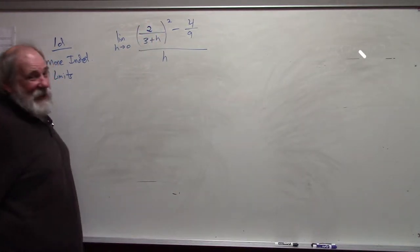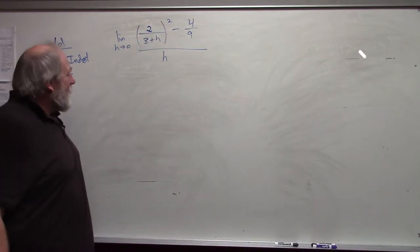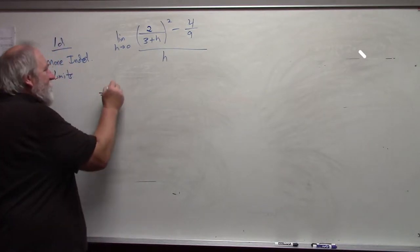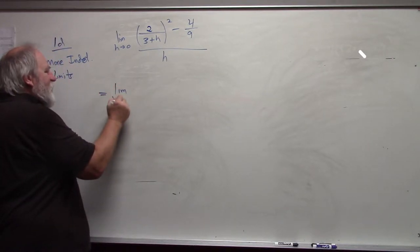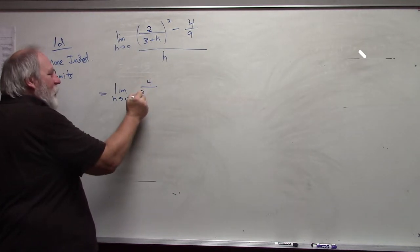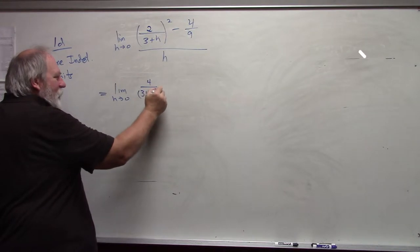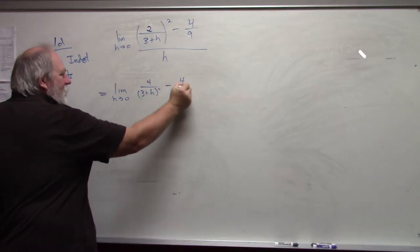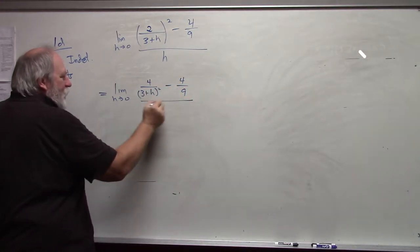So in this case, I just have to do a bunch of algebra and simplify this. So limit as h approaches 0 of this becomes 4 over 3 plus h quantity squared minus 4 ninths all divided by h.